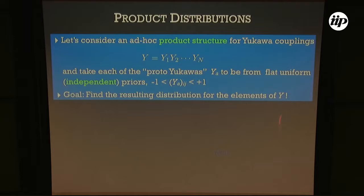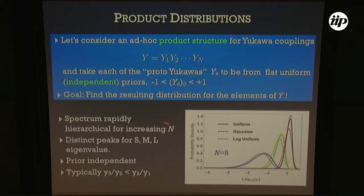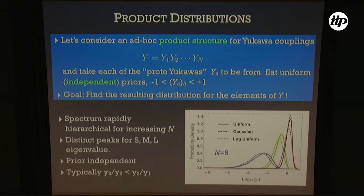Consider a completely ad hoc structure where the Yukawa coupling is just a product of several proto-Yukawa couplings y₁, y₂, …, yN, each drawn from independent uniform priors. Surprisingly, the eigenvalue spectrum becomes very rapidly hierarchical as n increases. For n=5 it is quite likely that the lightest eigenvalue is around 10⁻³ to 10⁻⁴.